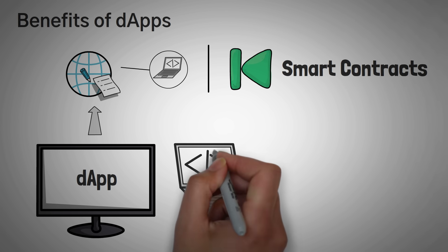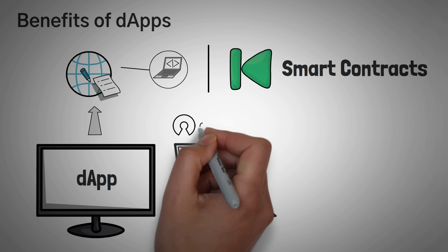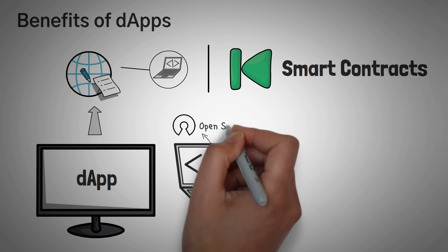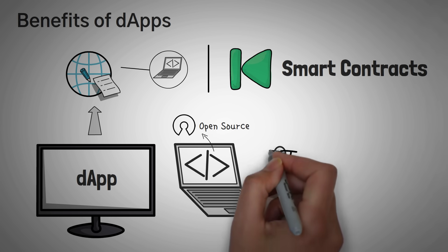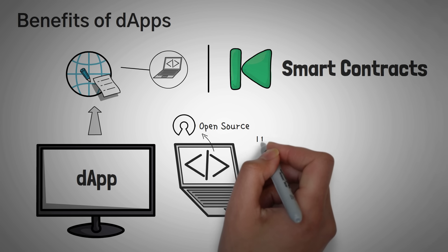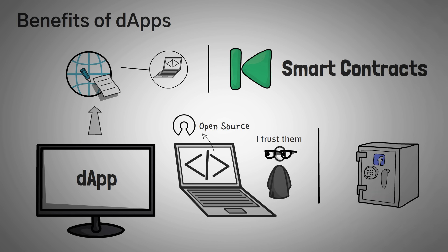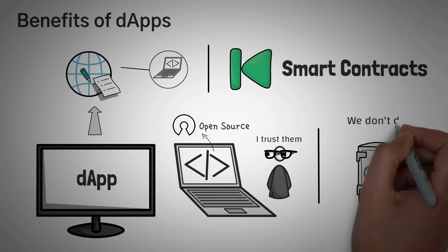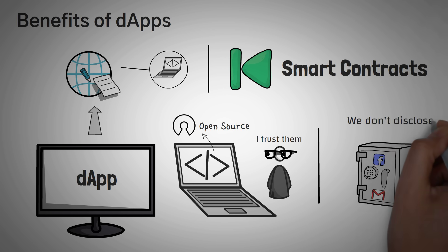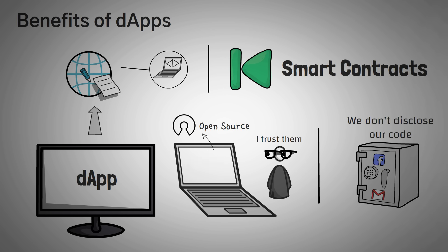Another benefit is that since the code is out there to be run, it is what we call open source, which means anyone can look at the code. This allows a lot more trust to be given to the application. We can't really look at how Facebook recommends us friends, or how Google knows what we ate for dinner. But with any smart contract, we can actually look at the code and see how it works. This is a big benefit over centralized applications.